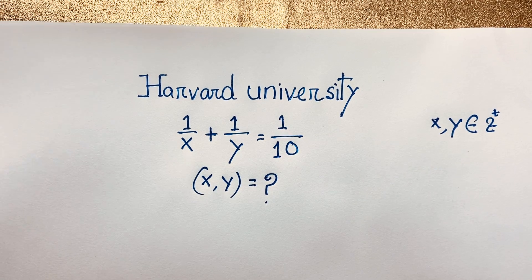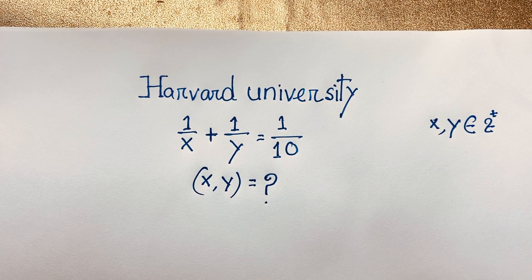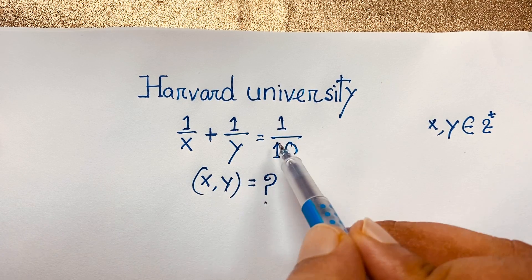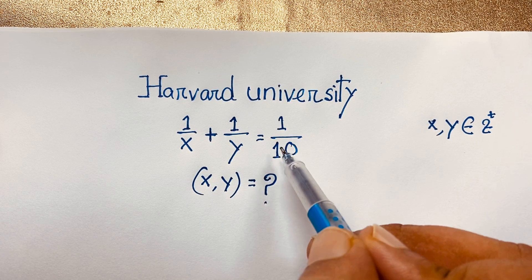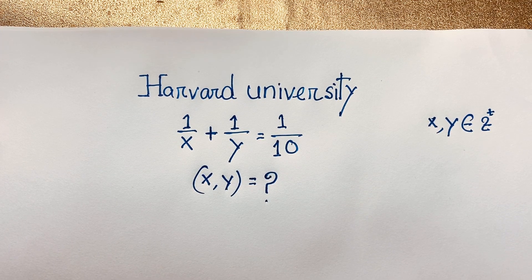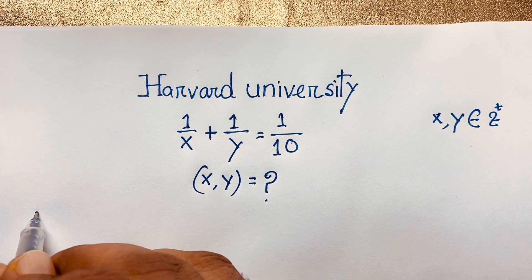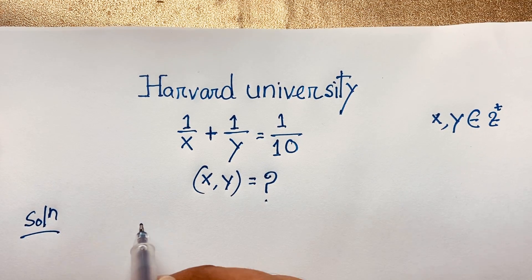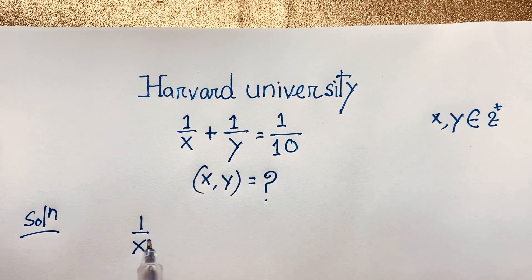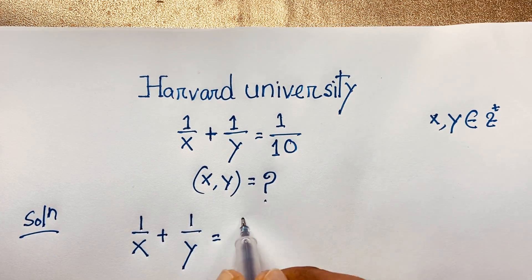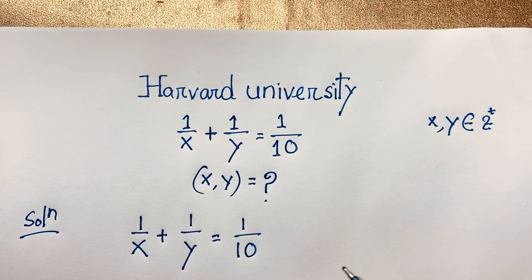Hello everyone, welcome to Rasha's Classroom. Today we solve an interesting algebra problem: 1 over x plus 1 over y is equal to 1 over 10. Find xy. How to solve this interesting Math Olympiad question. So our question is 1 over x plus 1 over y is equal to 1 over 10.